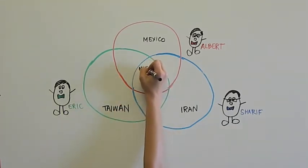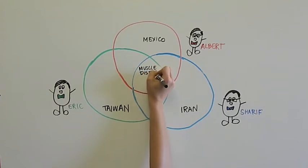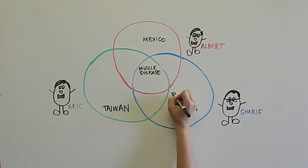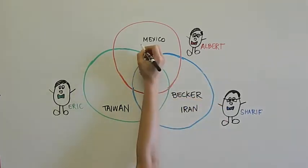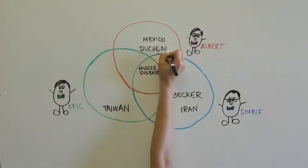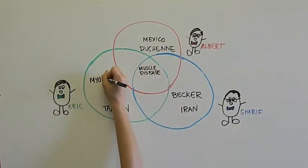Despite their different backgrounds, they had one important thing in common. All three families were affected by some type of muscle disease. Sharif's family is affected by Becker muscular dystrophy, Albert's by Duchenne muscular dystrophy, and Eric's by myotonic dystrophy.